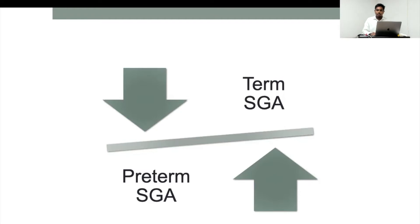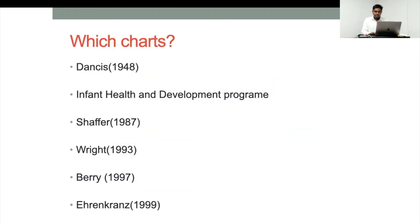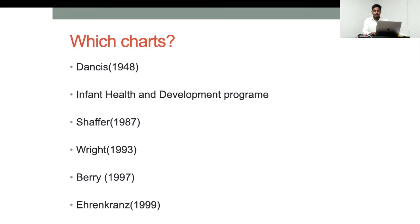SGA can also be divided into term SGA and preterm SGA. Preterm SGA has two compounding entities — prematurity and SGA — resulting in more acute and chronic complications. For monitoring, various SGA charts exist, ranging from Fenton to Penton charts. Earlier charts had limitations such as small sample sizes and lack of gender specificity. The modified Penton chart was developed from a very large population of around four million, from five developed countries, using a descriptive study design.